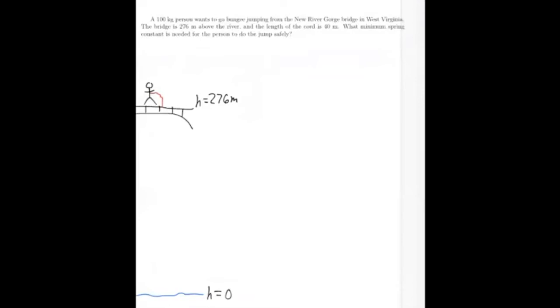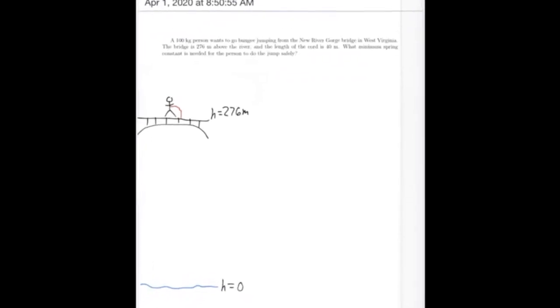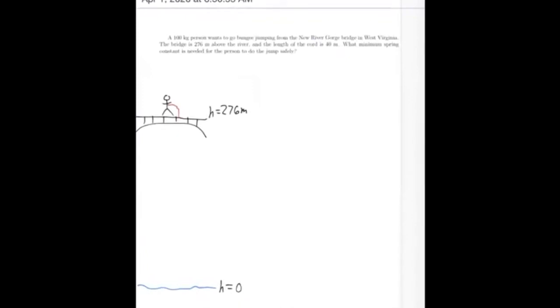The problem here we have is a bungee jumping problem, and you can see the picture there. So we have a person with a mass of 100 kilograms. They want to go bungee jumping from the New River Gorge Bridge in West Virginia.